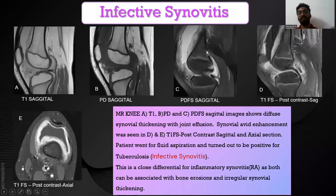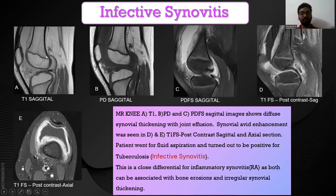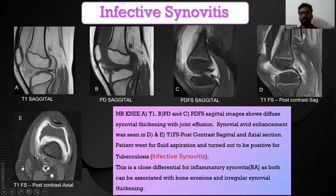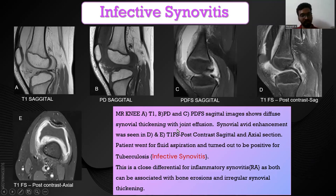A close differential for rheumatoid arthritis is infective synovitis. In this patient — a child who came with knee pain and swelling — on T1 sagittal, PD sagittal, and PDFS sagittal, joint effusion was seen associated with diffuse synovial thickening. On post-contrast images, diffuse synovial enhancement was seen, more evident on axial scans, which is consistent with infective synovitis.